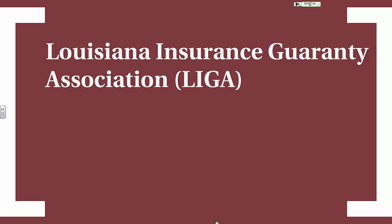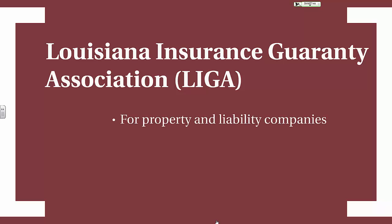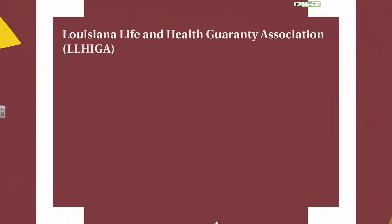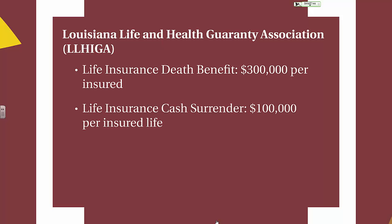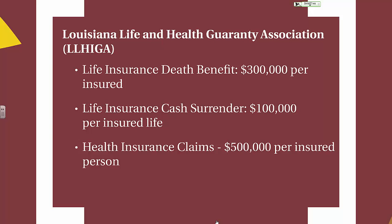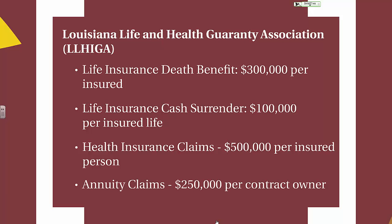Let's look at Louisiana's two guarantee funds. First, the Louisiana Insurance Guarantee Association, commonly referred to as LIGA — only for property and liability companies, with maximum limits of $500,000 per policyholder. If an insurance company becomes insolvent, LIGA will cover losses for the insureds from that company up to $500,000. Next is LAHAGA, the Louisiana Life and Health Guarantee Association, for life insurance, health insurance, and annuities. The guarantee amount for life insurance is $300,000 per insured and for cash surrender values $100,000 per insured life. In health insurance, the guarantee fund provides up to $500,000 per insured person, and for annuities, $250,000 per contract owner.